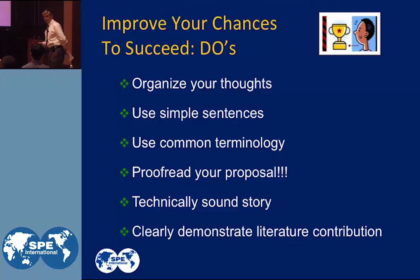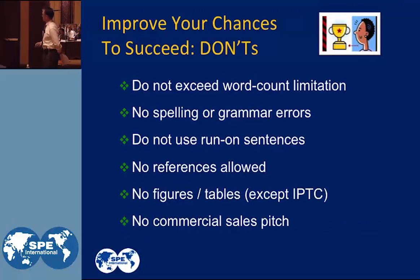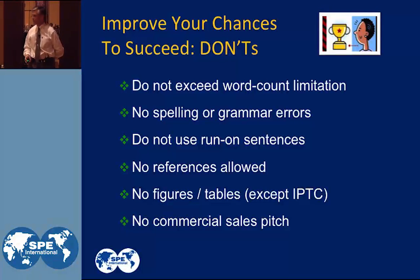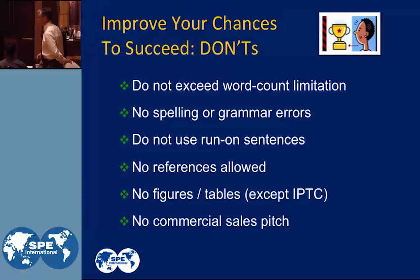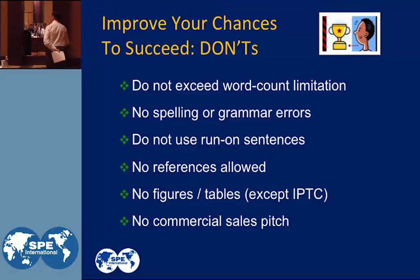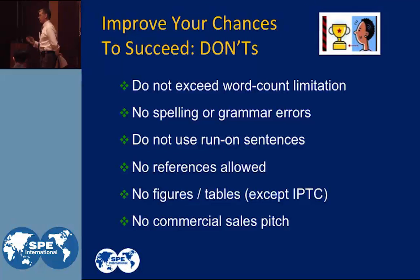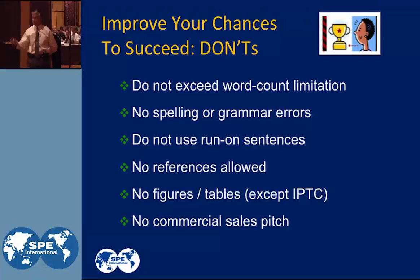Keep your eye on the prize — make sure you know what the objectives are for your abstract. What not to do: do not exceed the word count limitation. If your abstract gets cut off electronically, the important part may be at the tail end of the abstract, so it may not get accepted because of that.